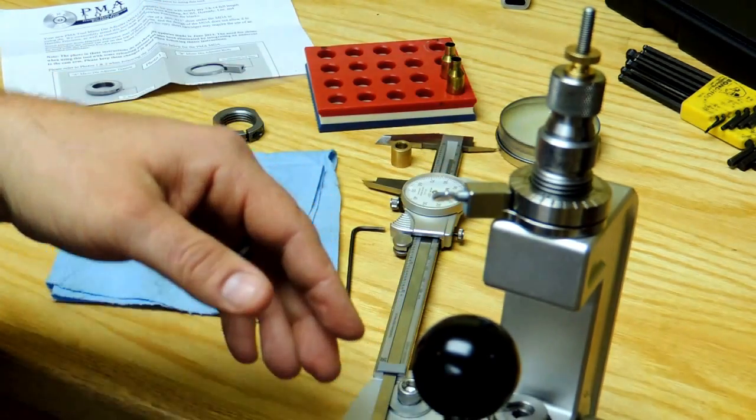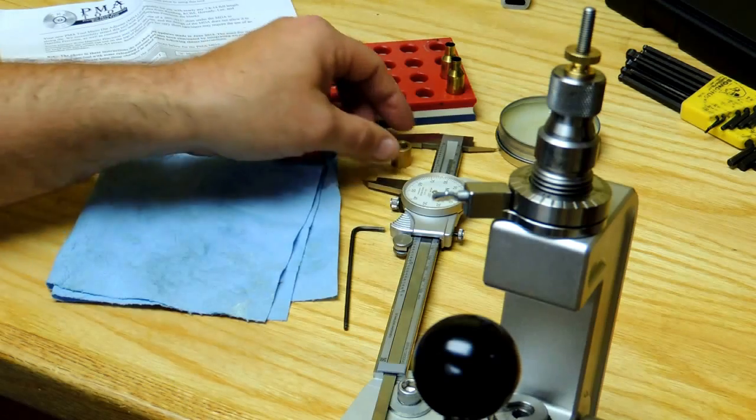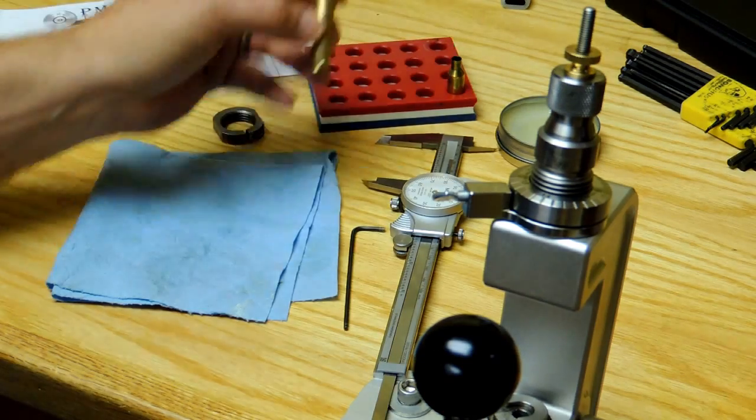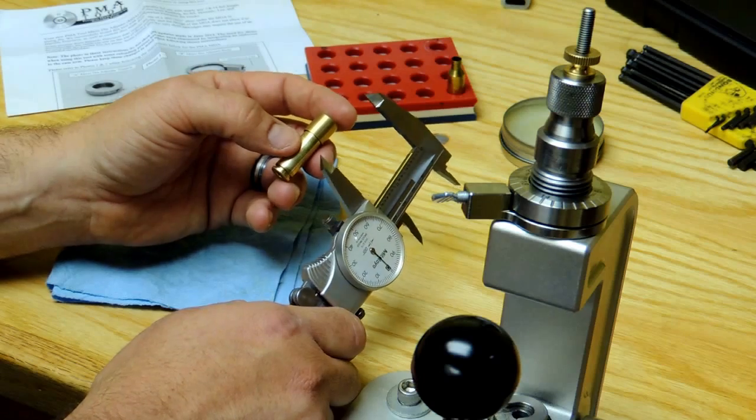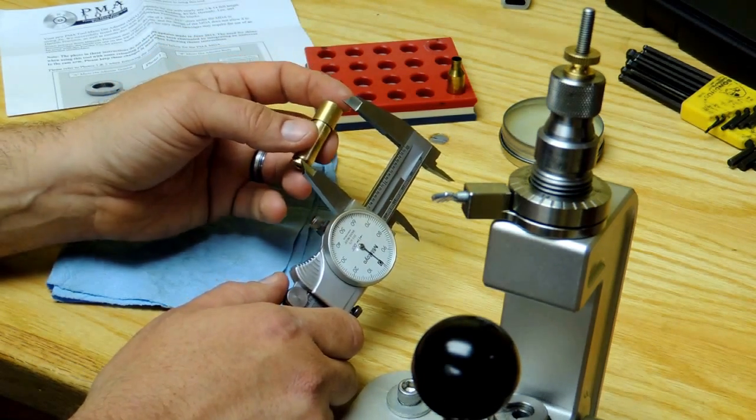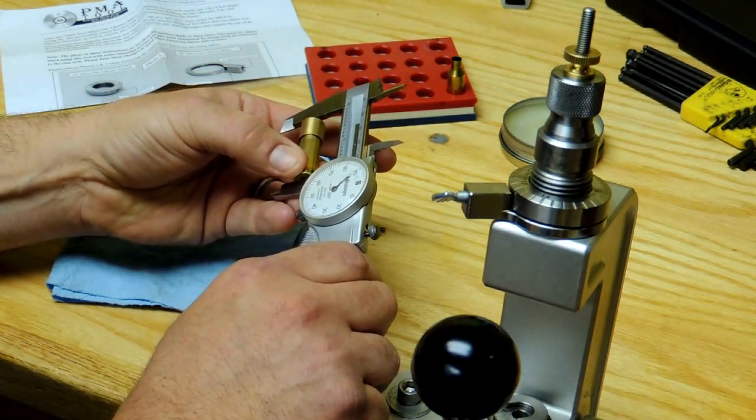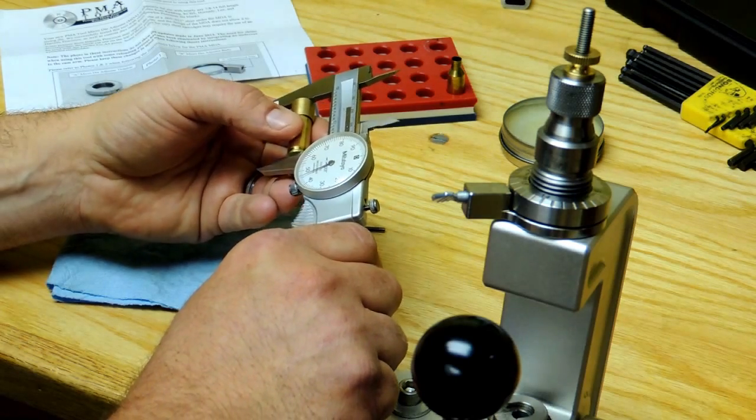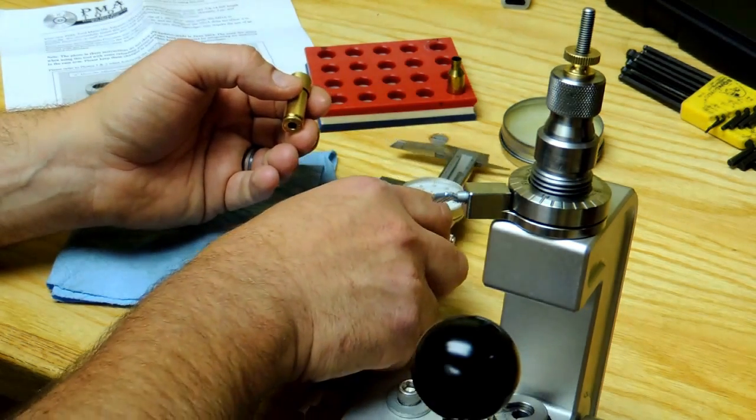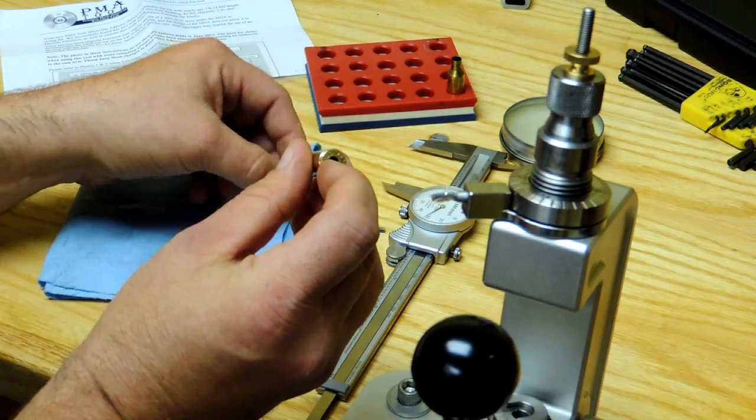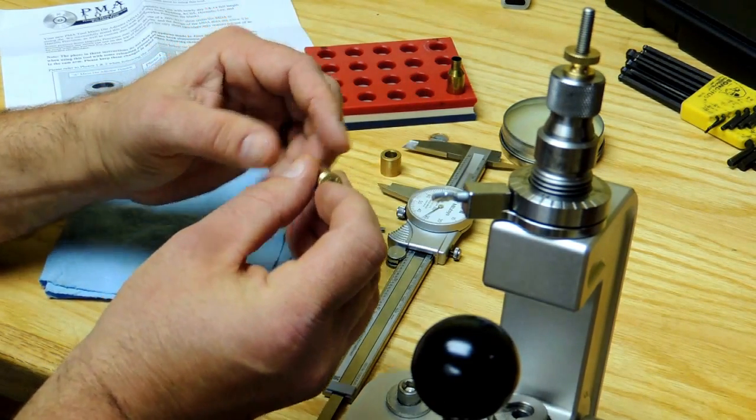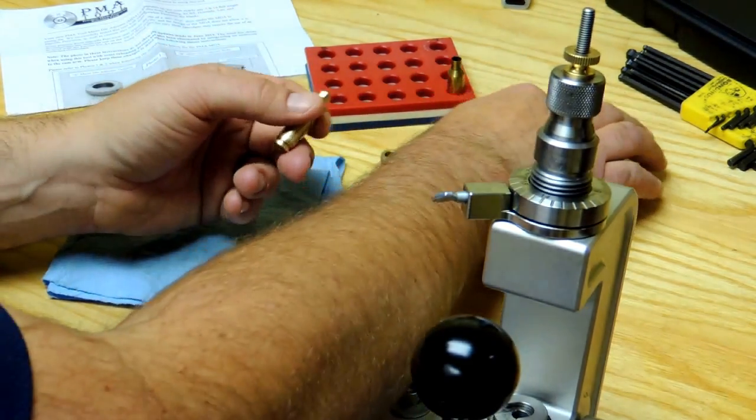Now in this position, it is ready to size a case. Now there are a lot of different ways to measure a case and determine how much you need to size. In this example, I am just going to use a bump gauge. I get my measurement off of a fired piece of brass, preferably with the primer knocked out. And now I am ready to size.